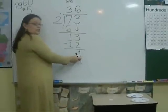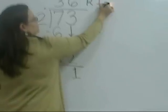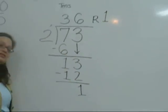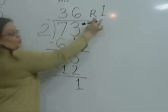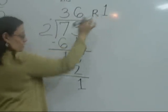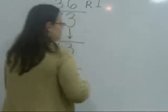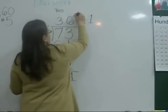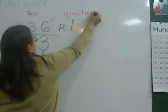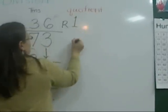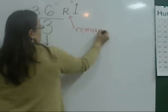What is this called? The remainder. So my answer is 36 remainder 1. And remember, 36 is the quotient and 1 is the remainder.